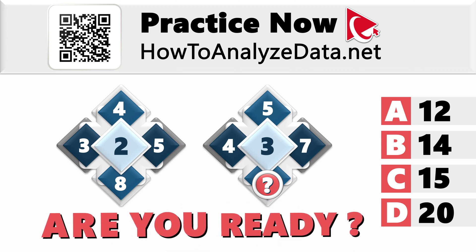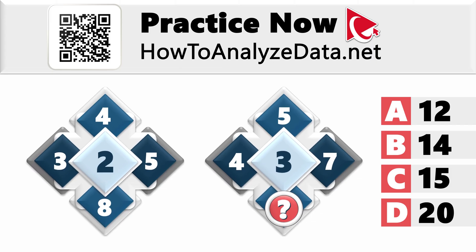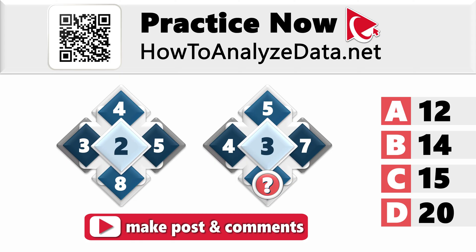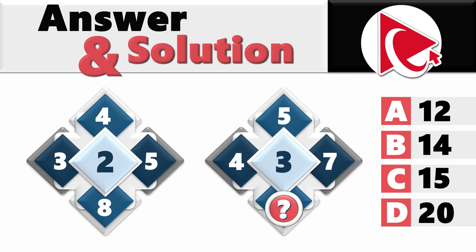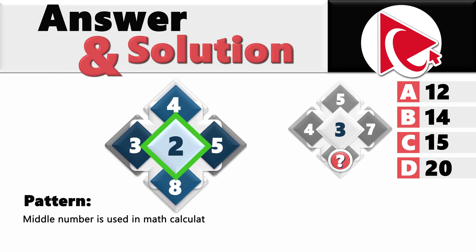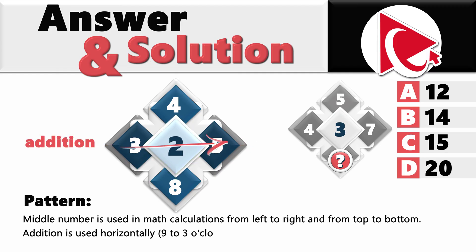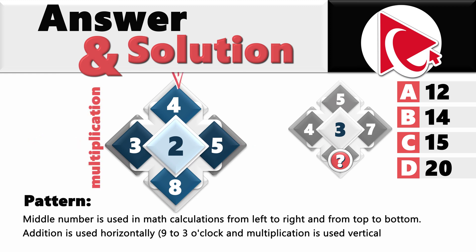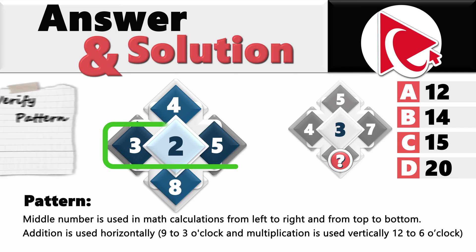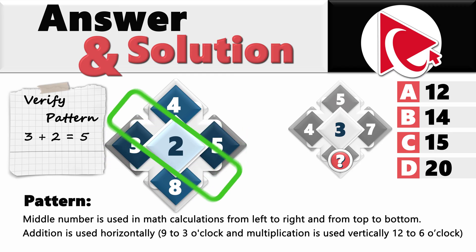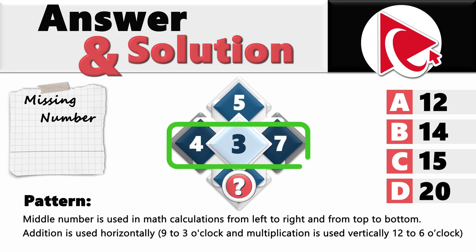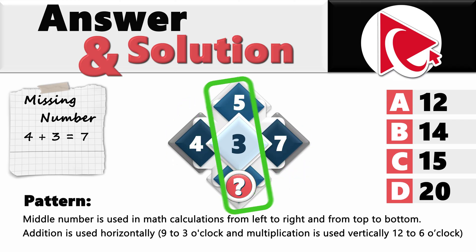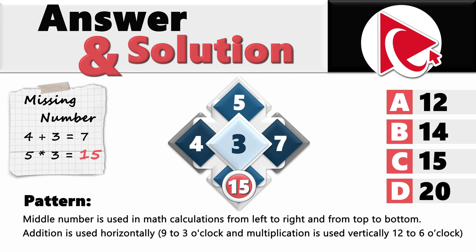Ready or not, here comes the solution. The numbers are calculated as a result of math operations, where the middle number is used in calculations from left to right and from top to bottom. Addition is used horizontally from 9 to 3 o'clock, and multiplication is used vertically from 12 to 6 o'clock. In the first diamond: 3 plus 2 equals 5, and vertically 4 multiplied by 2 equals 8. In the second diamond: horizontally 4 plus 3 equals 7, and vertically 5 multiplied by 3 equals 15. So the correct answer is choice C, 15.